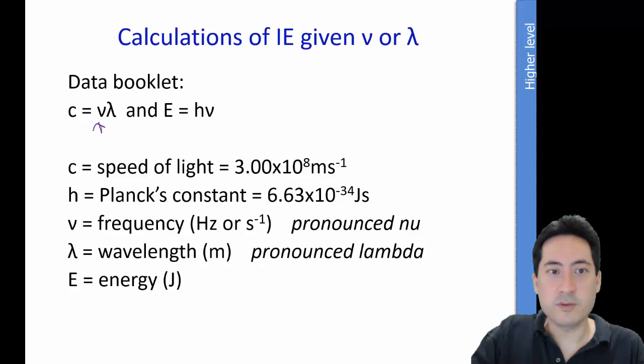So here we have nu, which is frequency, which is here. Pronounce nu, which is frequency. Why didn't they do an F? I don't know. All right, and there's Planck's constant, which is in your data booklet. Speed of light, which is in your data booklet. You might be given this, and you might need to work out this or vice versa.